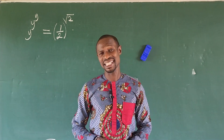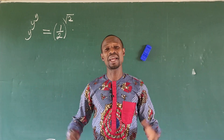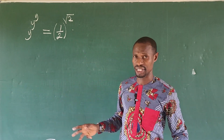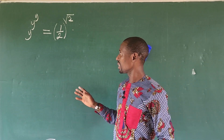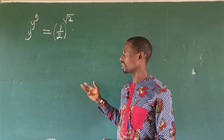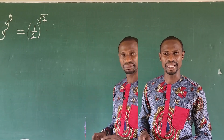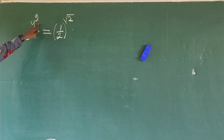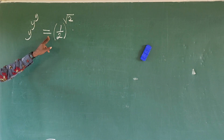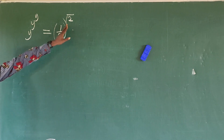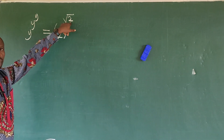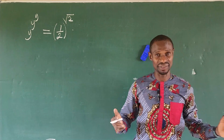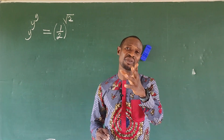Hello everyone, welcome to Online Math TV. Today we have a nice exponential equation on the board. The question reads: y to the power of y, all to the power of y, equals 1 over 2, all to the power of root 2. What would be the possible value of y that will satisfy this equation?